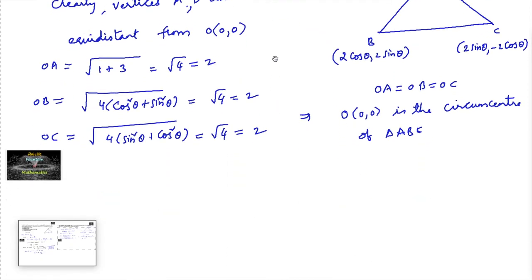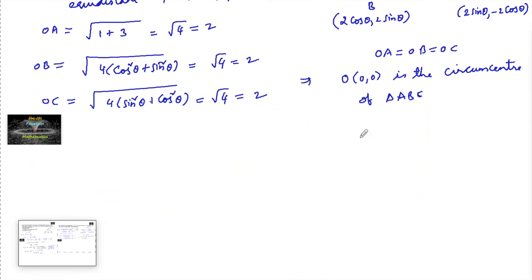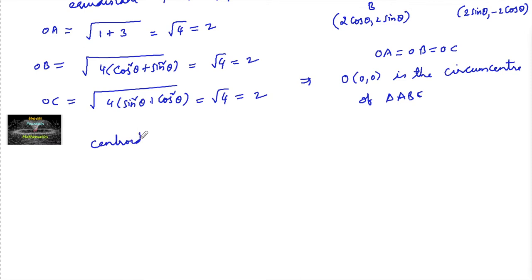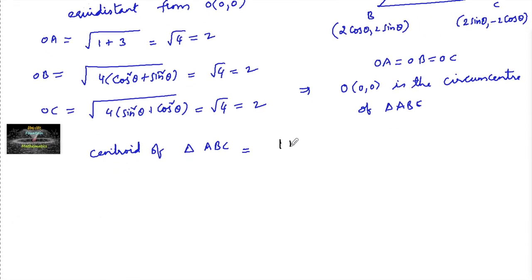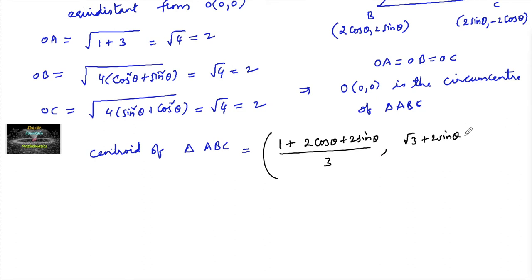Now we find the centroid of triangle ABC. The centroid equals ((1 plus 2 cos theta plus 2 sin theta) divided by 3, (root 3 plus 2 sin theta minus 2 cos theta) divided by 3).